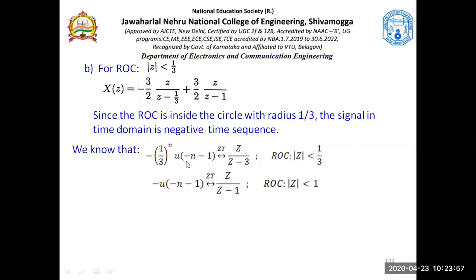What should be in the time domain? There should be minus (1/3)^n · u(-n-1). This is a negative time exponential. It is the same signal here with 1/3. This is 1/3 when ROC is less than |Z| less than 3. So in this place you need to have minus (1/3)^n · u(-n-1). And in this place it is minus (1)^n · u(-n-1), and since 1^n is 1, we just don't write that.